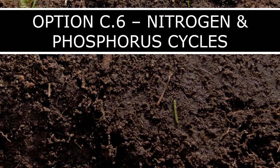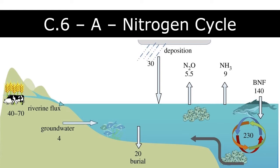Today we're going to talk about both the nitrogen and the phosphorus cycles and how they interact with organisms and the environment — the biotic and abiotic worlds. This covers all of section 6 for Option C of the syllabus. This first video will be focused on the nitrogen cycle, and a second video will be created separately for the phosphorus cycle.